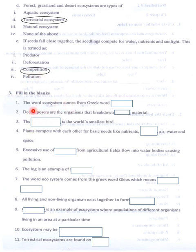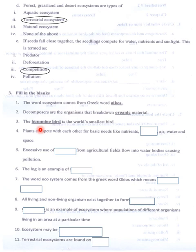Fill in the blanks. The word ecosystem comes from the Greek word 'eikos.' Decomposers are the organisms that break down organic material. The hummingbird is the world's smallest bird. Plants compete with each other for basic needs like nutrients, sunlight, air, water and space.